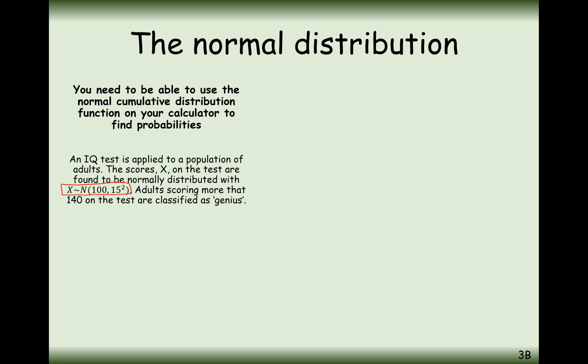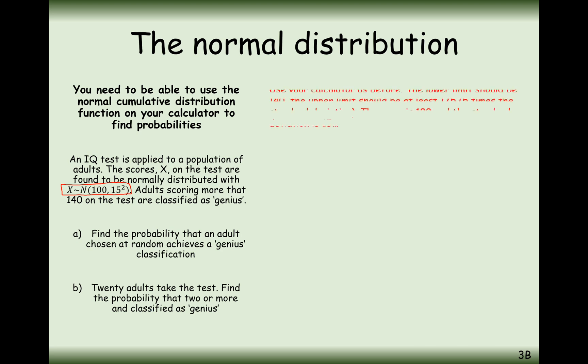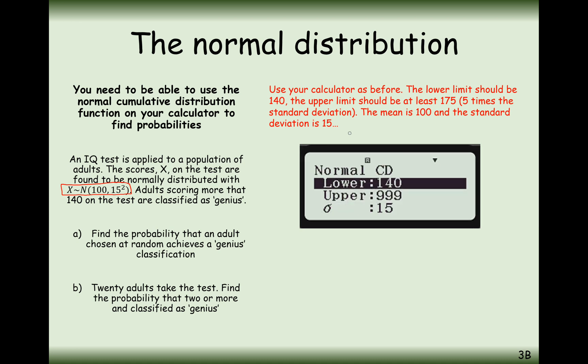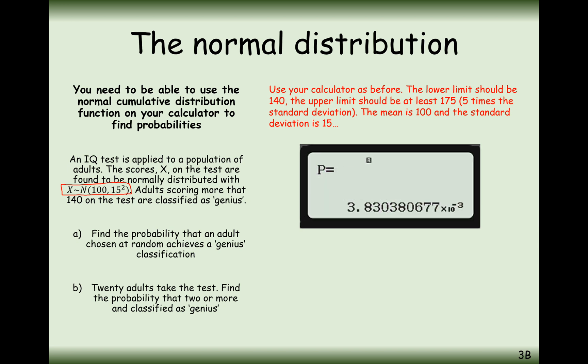Adults scoring more than 140 on the test are classified as genius. Find the probability that an adult chosen at random achieves a genius classification. What we're going to need to do is use your calculator as before. Use the lower limit as 140, upper limit as 175 or just a really big number. Into the normal CD mode: 140 is the lower bound, upper bound 999, standard deviation of 15, mean of 100. We get 0.00383 to three significant figures.